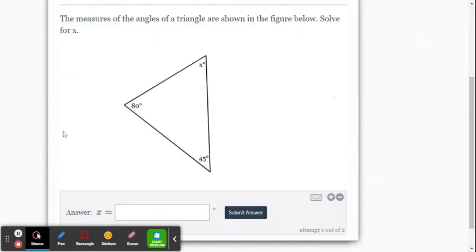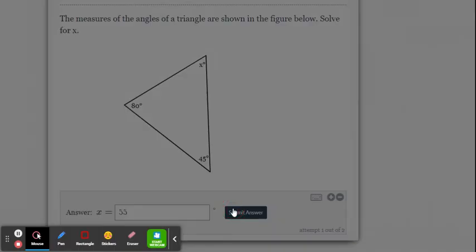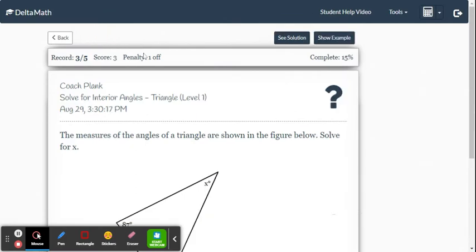Now, these problems here are pretty straightforward because they're only giving us one x each time. So I'm okay with students just doing the math quickly in their head or using a calculator. 80 plus 45 is 125. Then you go 180 minus 125, we get 55. We just enter.